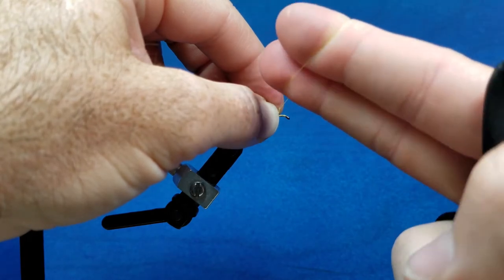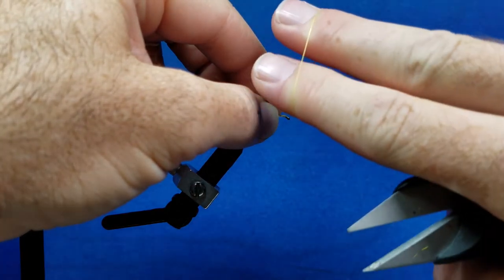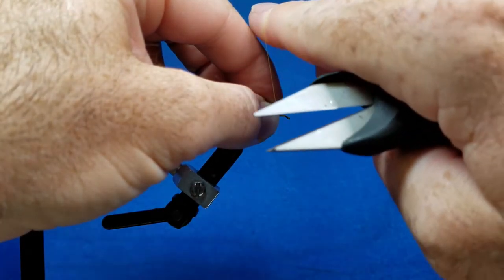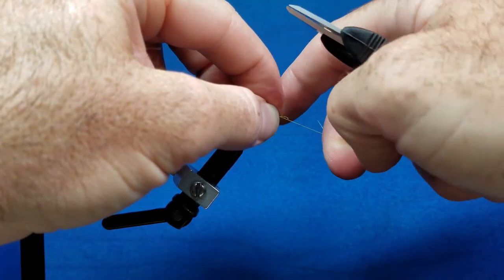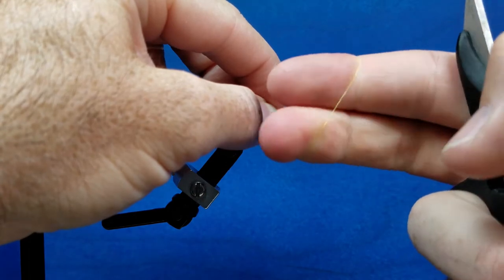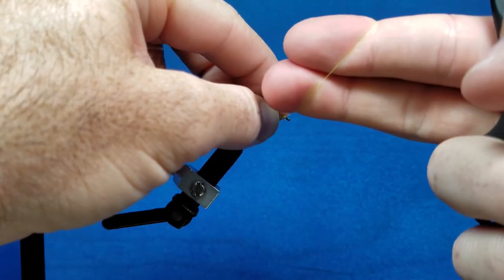So we pivot on that pointer finger, facing away, catch that thread with my middle finger, vertical strand goes over the top, and my fingers are back toward me.